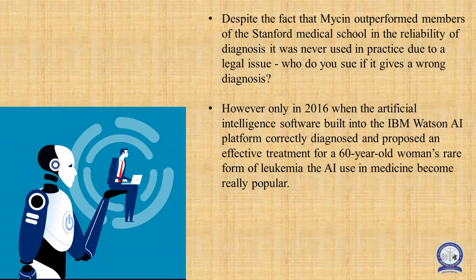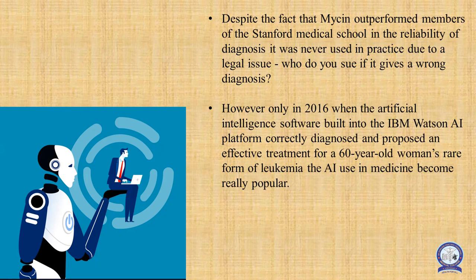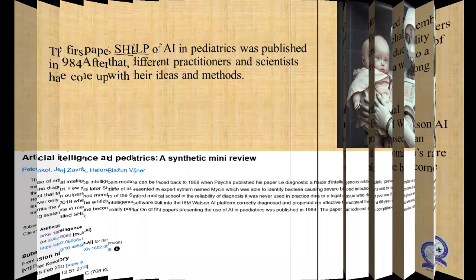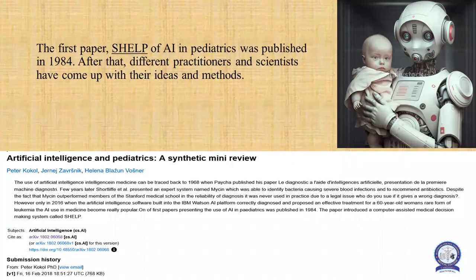Who do you sue if it gives a wrong diagnosis? That's why the technology in artificial intelligence for the healthcare sector was prolonged. However, only in 2016 when the artificial intelligence software built into the IBM Watson AI platform correctly diagnosed and proposed an effective treatment for a 60-year-old woman with a rare form of leukemia did the use of AI in the healthcare sector become popular. The first paper on the use of AI in pediatrics was published in 1984.